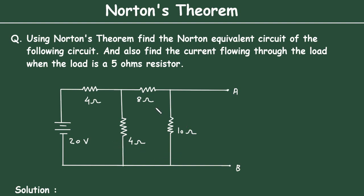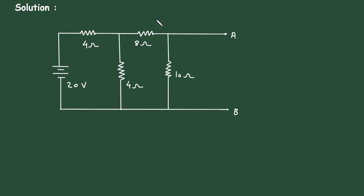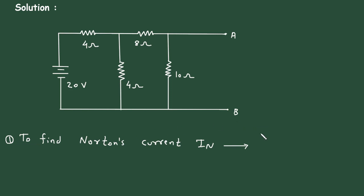First of all, we have to find the Norton equivalent circuit. To find Norton's current IN, we have to short circuit terminal AB. This will be our step number 1: short circuit terminal AB.